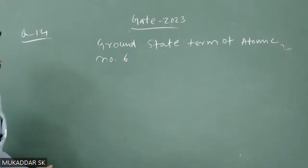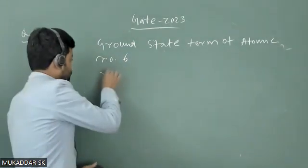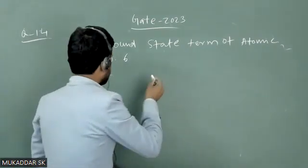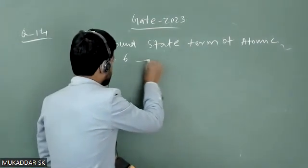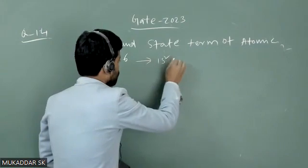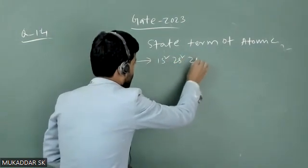For atomic number 6, the electronic configuration will be 1s² 2s² and then we will have 2p².